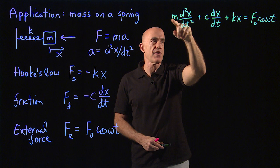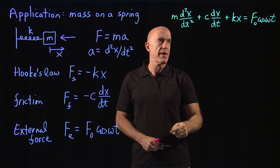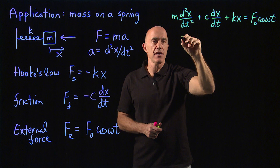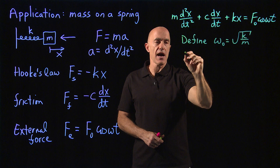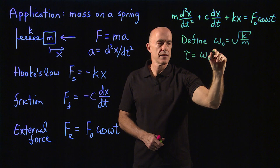Remember that we divide through by m and whatever is multiplying x becomes our omega naught squared. So omega naught squared is k over m. So here we will define omega naught equal to root k over m.